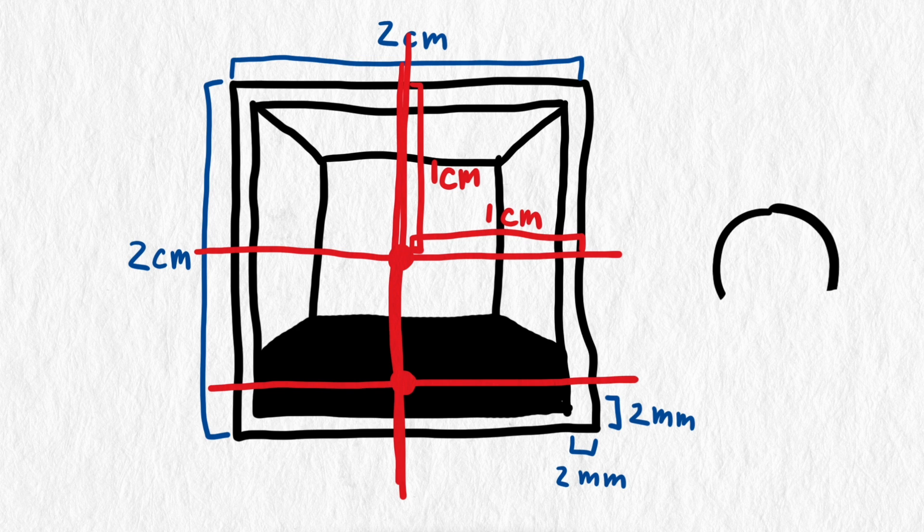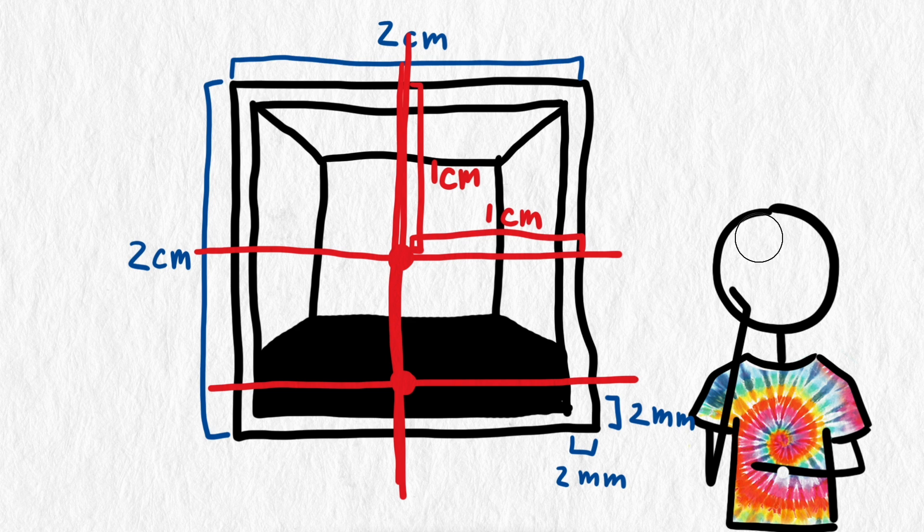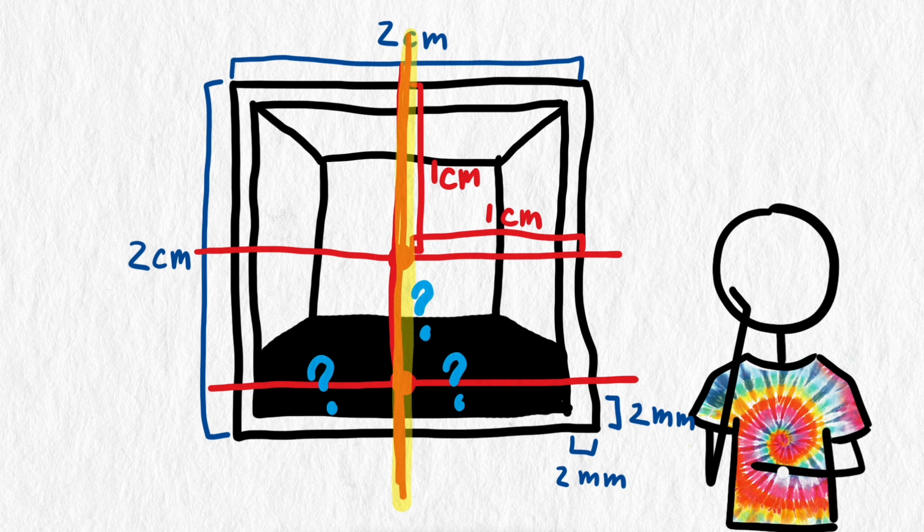But to answer our question, we need to find the center of gravity of both of these two things together, which has some symmetry. We know the center will fall on this line, but we don't know where on the line. Let's look at some 2D figures to make sense of what's going on.